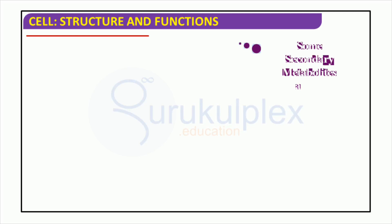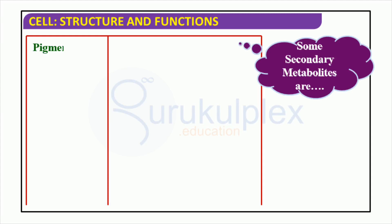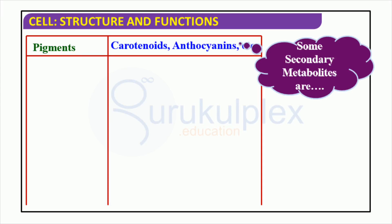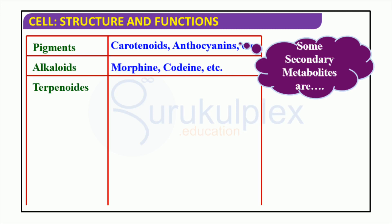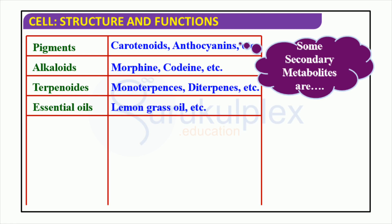Today's biochemistry lesson dives into the captivating world of biochemically active molecules, also recognized as secondary metabolites. These molecules can be categorized into various groups, comprising of pigments, alkaloids, terpenoids, essential oils, toxins, lectins, drugs, carotenoids, and anthocyanins.